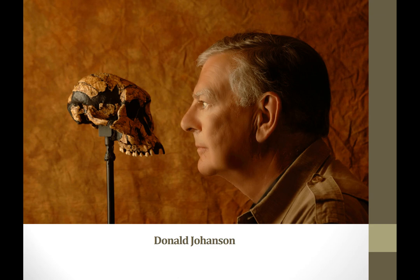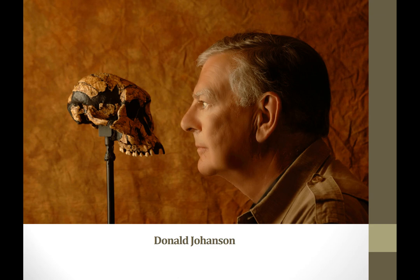After the Leakeys, we talk about Donald Johanson — he is with his famous find, Lucy. Lucy was a set of skeletal remains which Johanson found in 1974, working in Ethiopia. The Leakeys started in the 1930s and found their skull in 1959, and now Johanson is finding his in 1974. You'll never need to know any of these dates, but it's just interesting to see how long it takes between these big finds. He found a more complete skeleton — the Leakeys found a single skull, but Johanson found a full, or mostly full, skeleton. He dated it to at least three million years old, so he found something even older than some of the tools the Leakeys were finding.